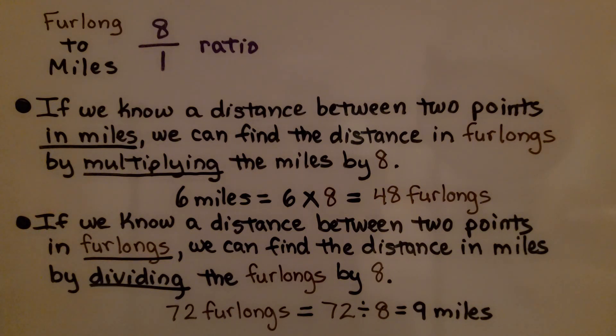And if we know the distance between two points in furlongs, we can find the distance in miles by dividing the furlongs by 8. So if we have 72 furlongs, we know what it is in miles by doing 72 divided by 8. That's 9 miles.